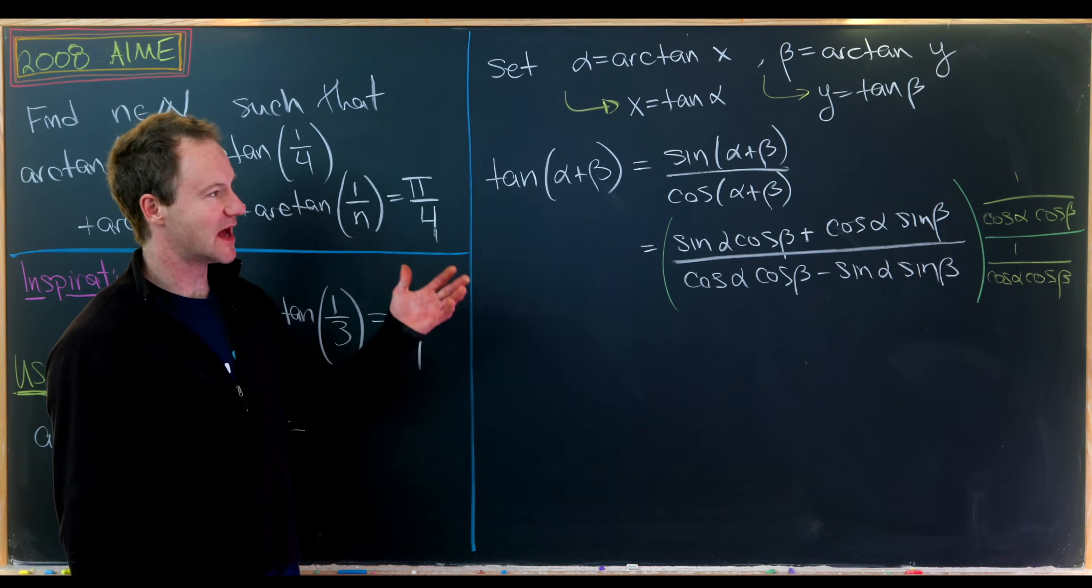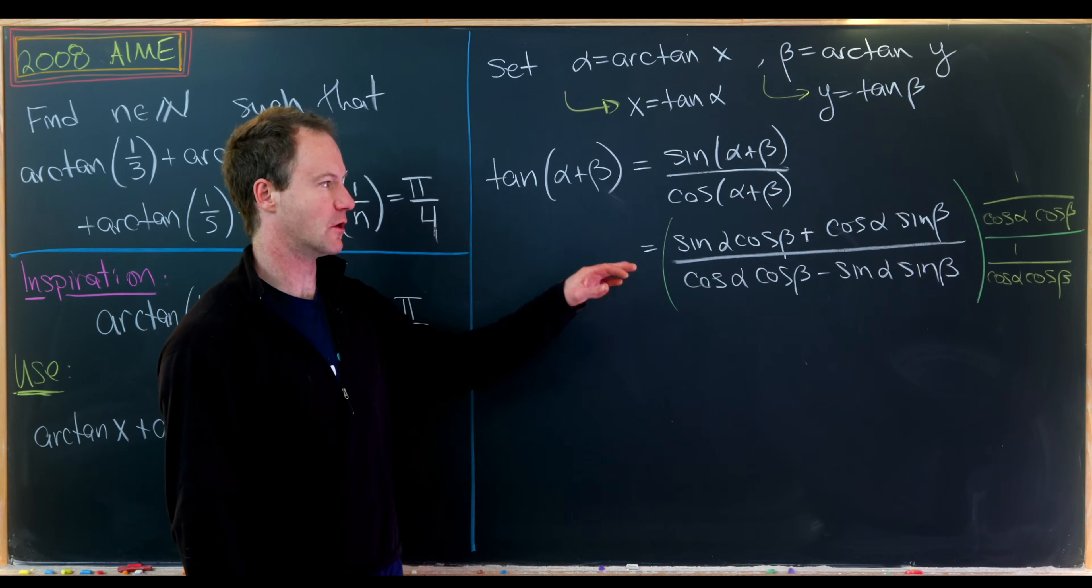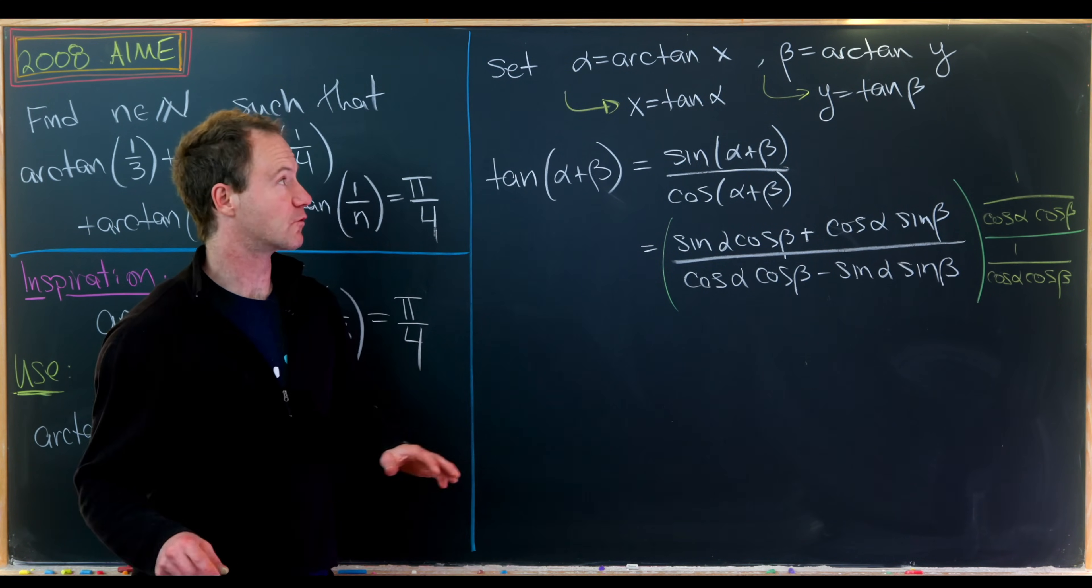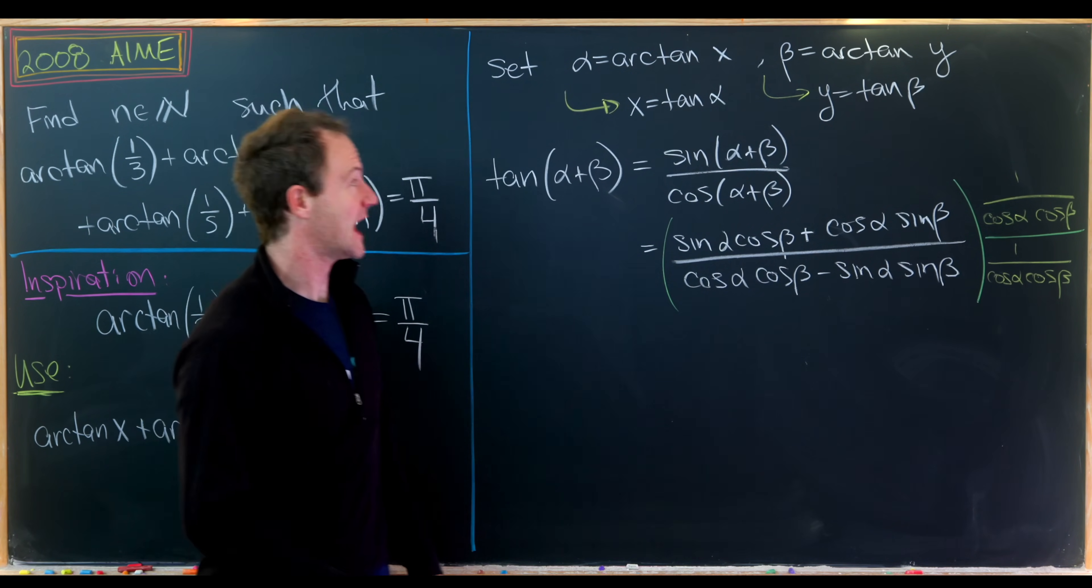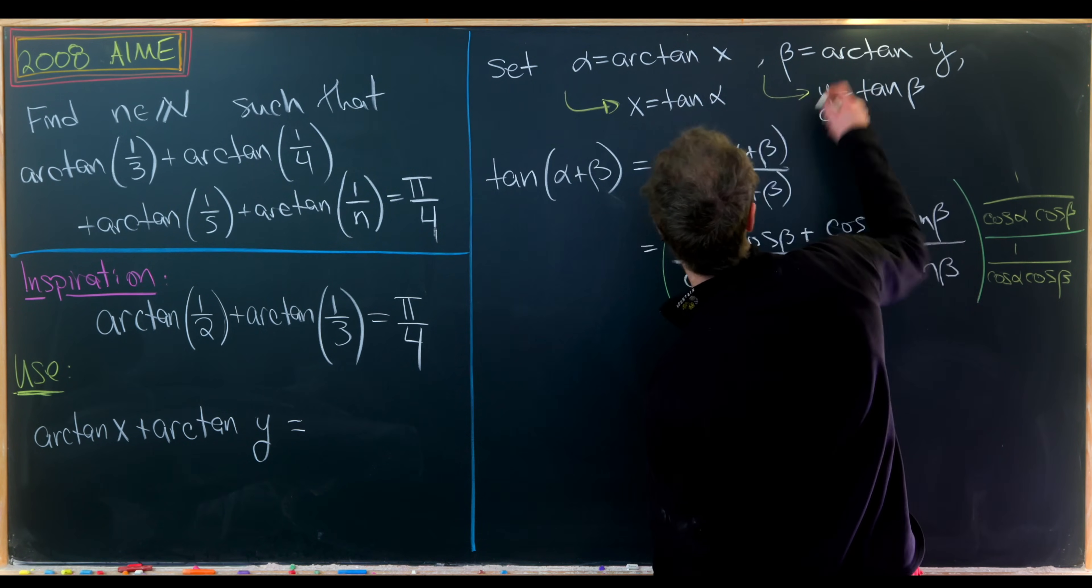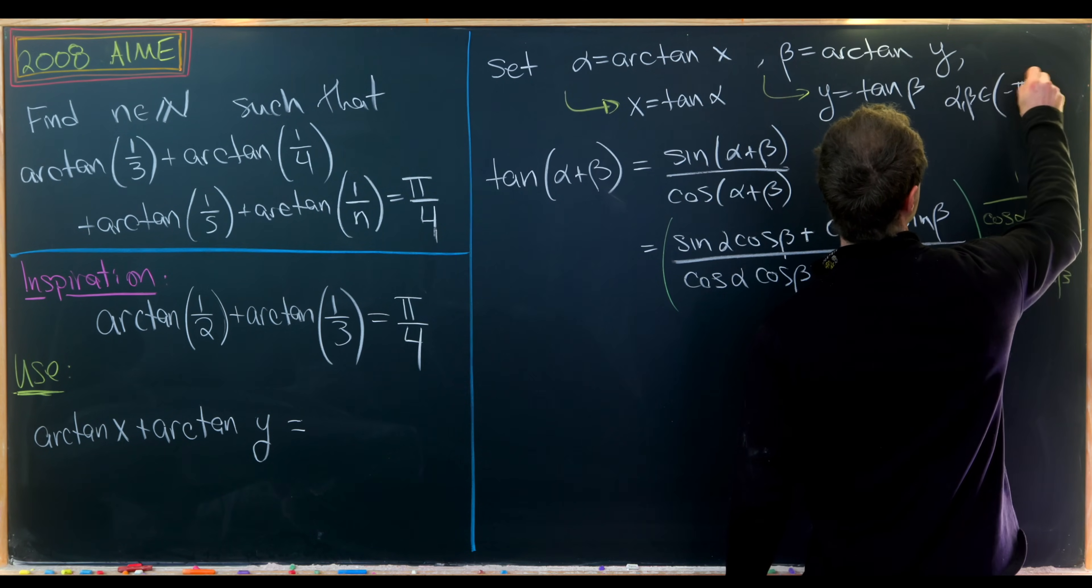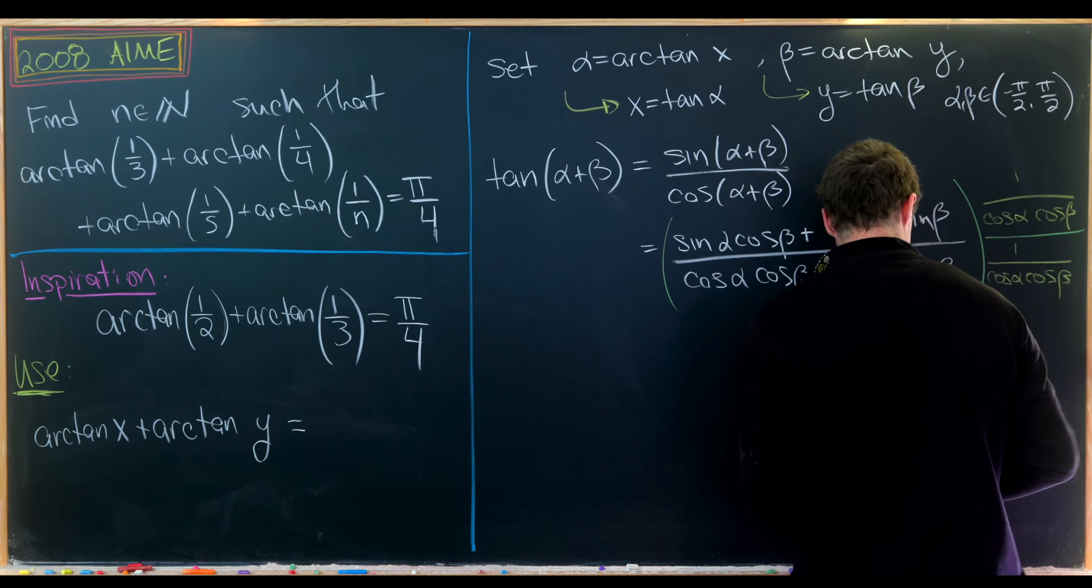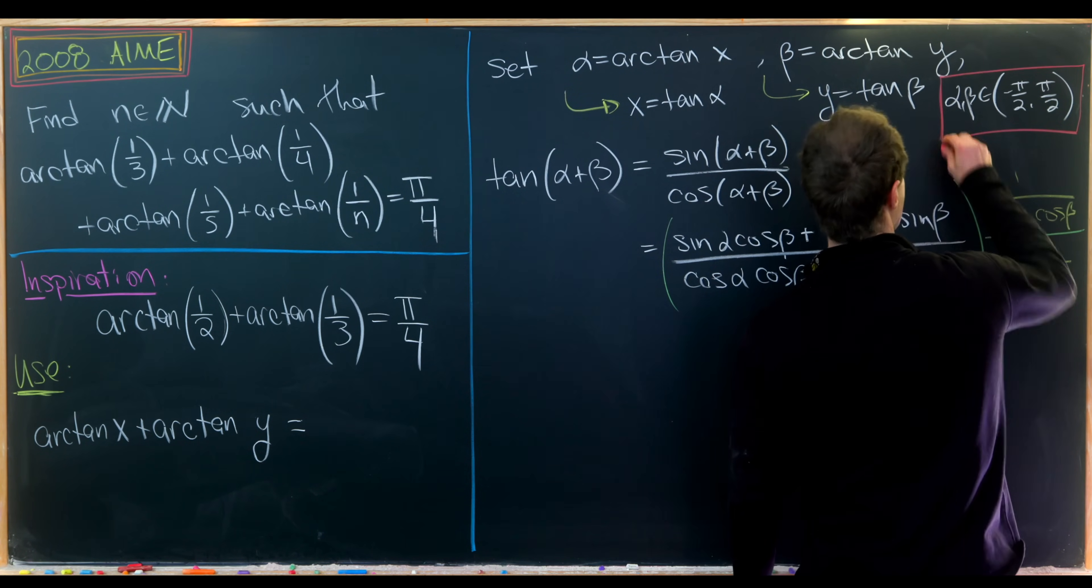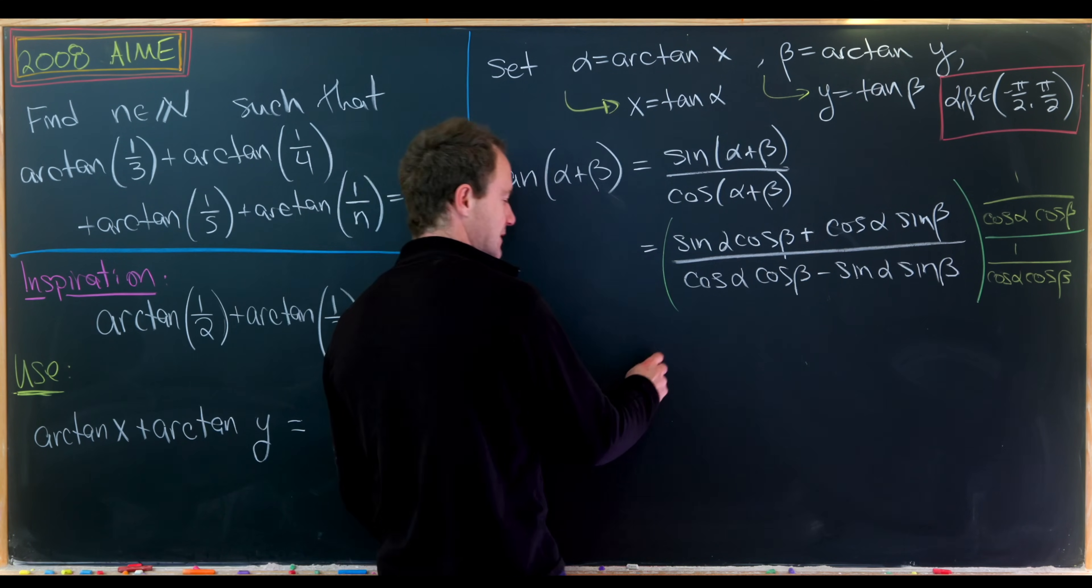You might be worried we're multiplying by 1/0. In other words, maybe one of these cosine values is zero. But rest assured that's not the case, because by what we said about the principal branch, α and β come from the interval -π/2 to π/2 not including π/2. So it does not include any of the zeros of the cosine function.